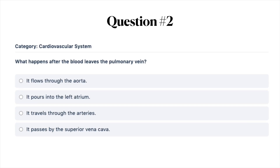Next question: what happens after the blood leaves the pulmonary vein? A, it flows through the aorta; B, it pours into the left atrium; C, it travels through the arteries; or D, it passes by the superior vena cava. Go ahead and pause the video while you answer this question and then turn it back on when you're ready.